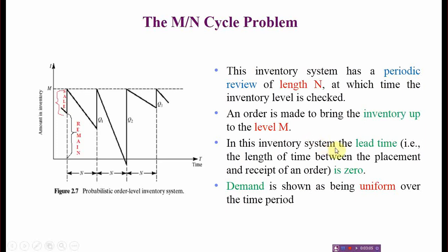In this inventory system, the lead time is the length of time between the placement and the receipt of an order. The lead time is kept constant in this example. Demand is shown as being uniform over the time period, and we will calculate demand by using a distribution table.